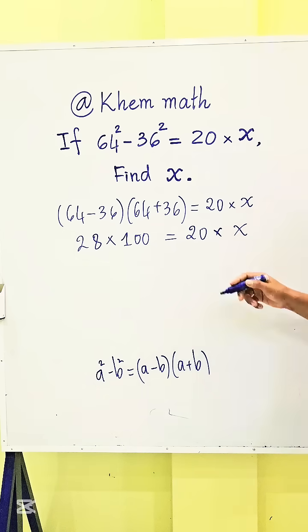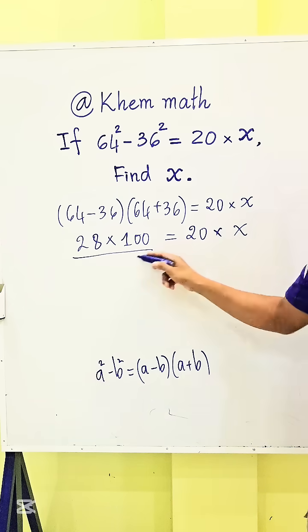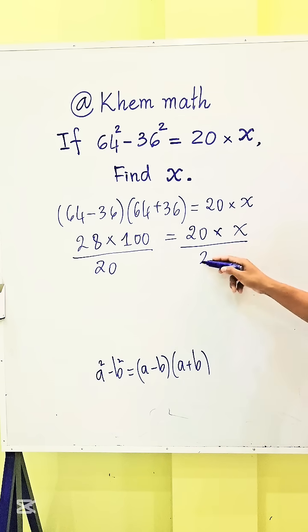So now we want to find the value of x. We divide both sides of this equation by 20.